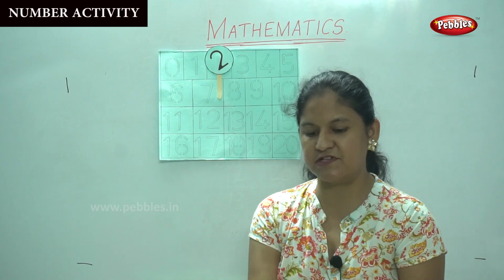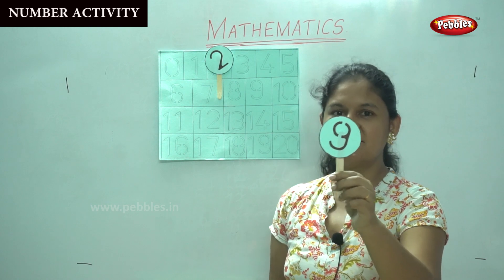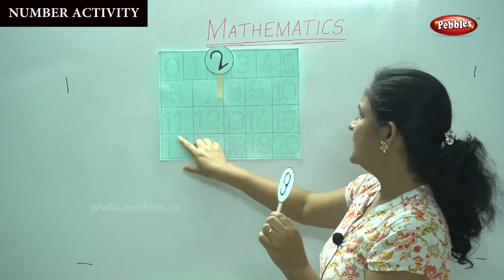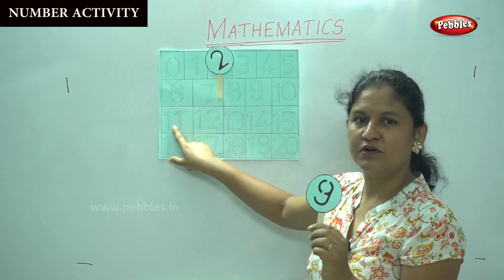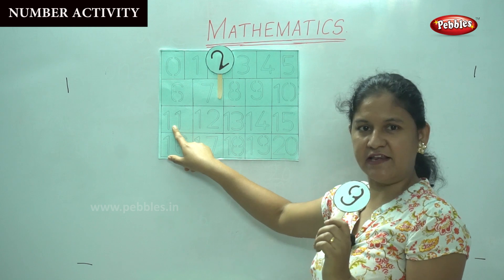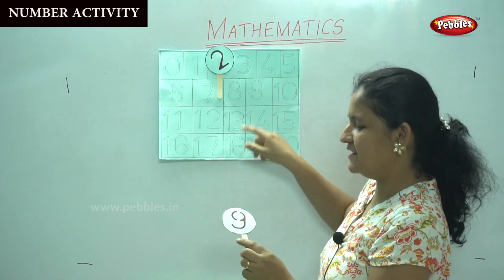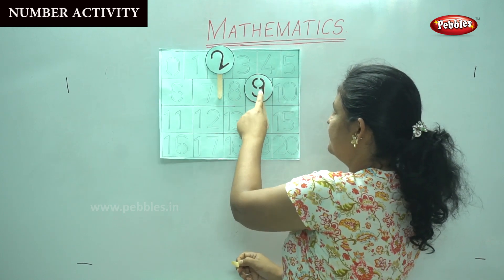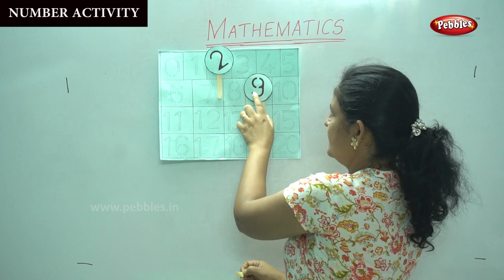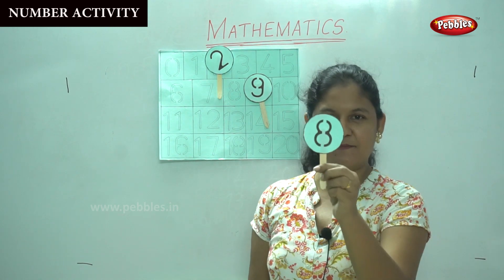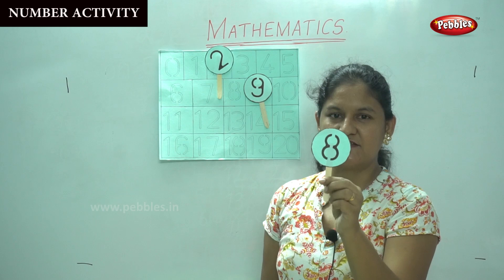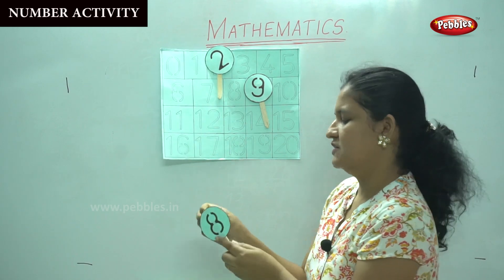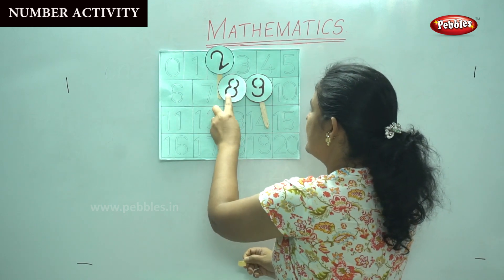The next number — what number is this? Yes, it is number 9. Can somebody tell me where number 9 is on the chart? Is this number 9? No. So where do I find number 9? Yes, number 9 is here. So I'm placing number 9 here. Shall we take the next number? The next number is number 8. So I'll place number 8 on the chart.